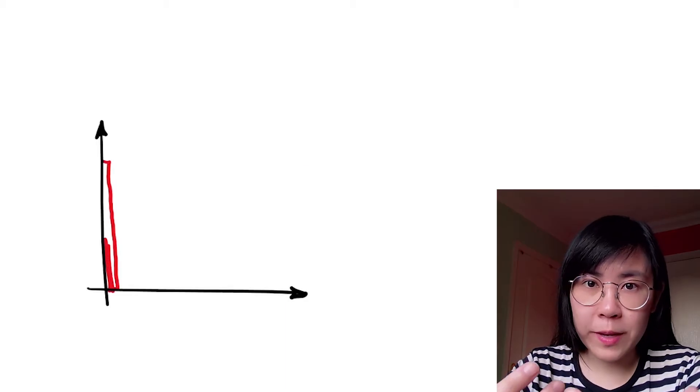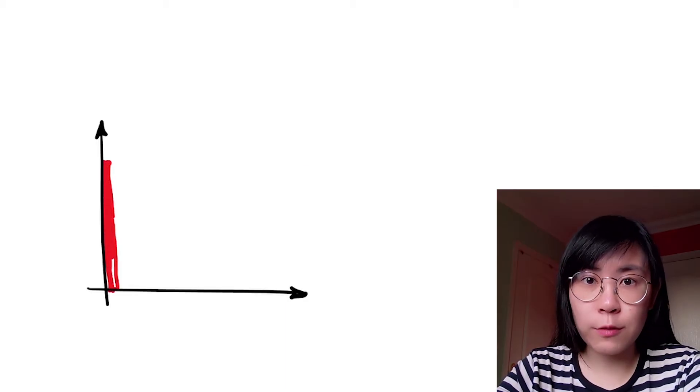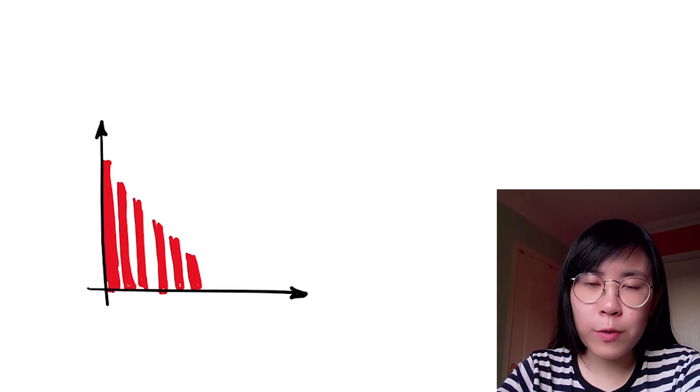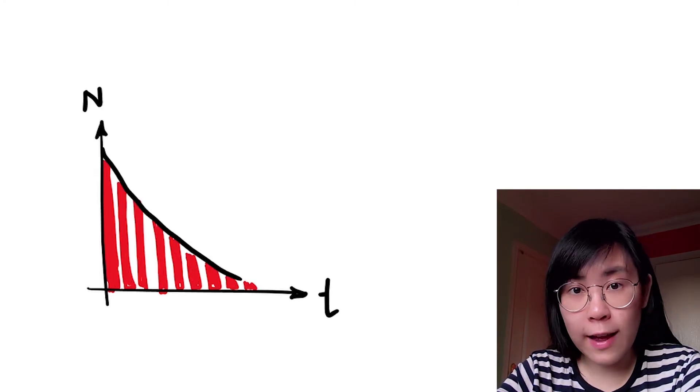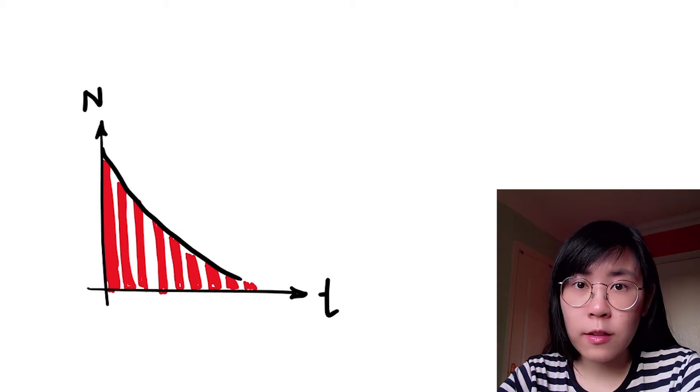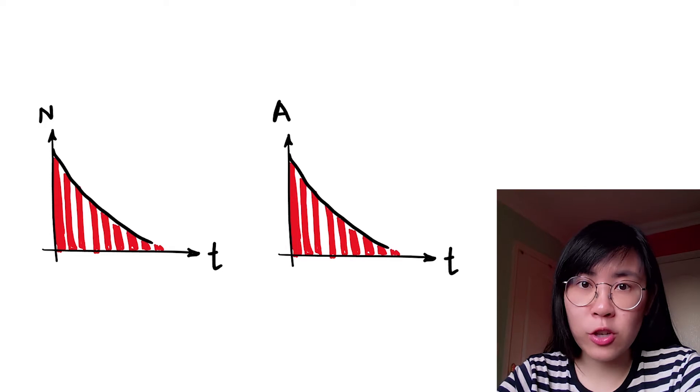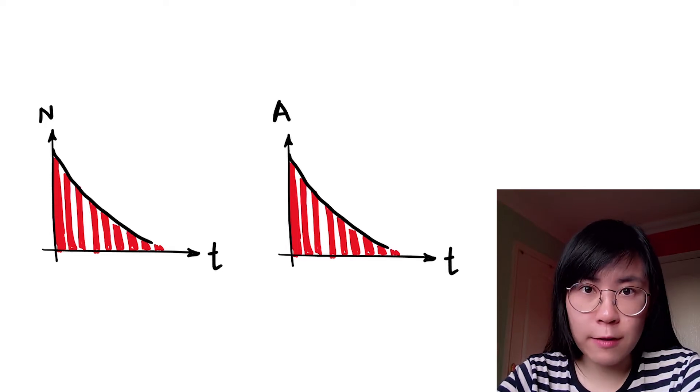A radioactive sample will begin with a number of radioactive nuclei and then over time they will decay so that there are fewer number of radioactive nuclei left within the sample. The graph of the number of nuclei against time shows us the same shape as the graph of activity against time.